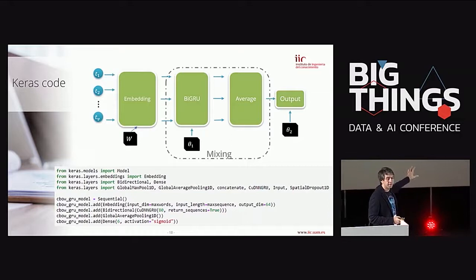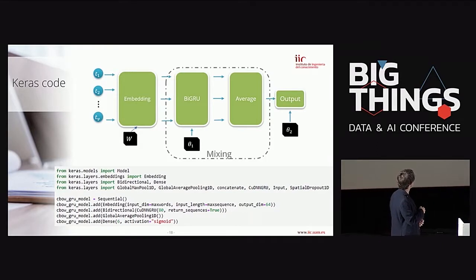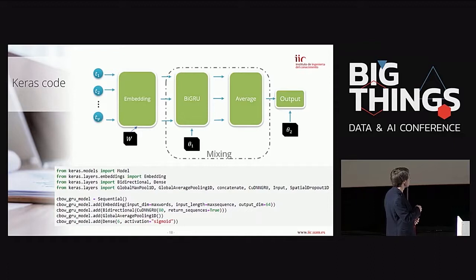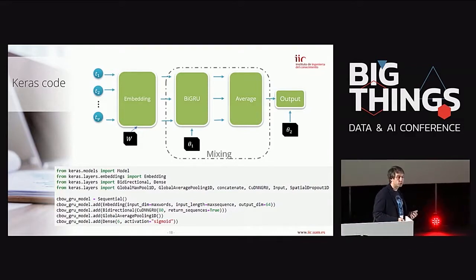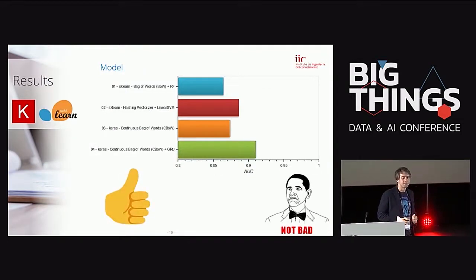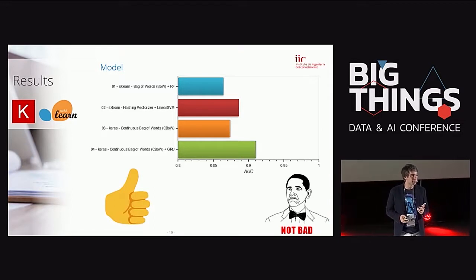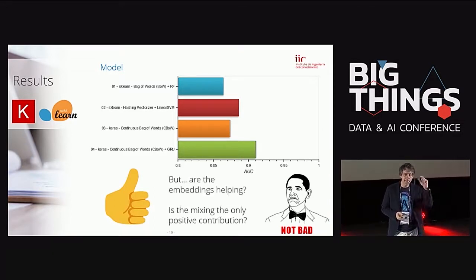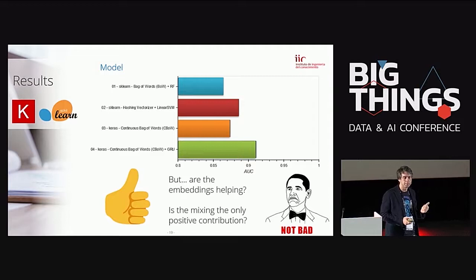The code looks very similar to before, with a bidirectional GRU layer added before the global average pooling. We train this model, test it, and now it works. But there's a subtle question: is it working because of the mixing model, or are the embeddings really helping? To answer that we need to step back and think about language models.